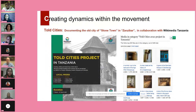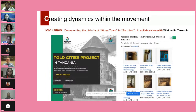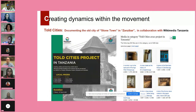Another example of creating dynamics within the movement is the thematic project of Tall Cities. World heritage can be partitioned into many groups — buildings, cities, archaeological sites — so we are working on creating thematic projects that work on world heritage sites of the same nature but belonging to different countries simultaneously. Tall Cities targets cities, urban quarters, and towns listed by UNESCO as world heritage. We had a very successful collaboration with Wikimedia Tanzania, and I will let my friend Anthony talk about this collaboration and its outcomes.